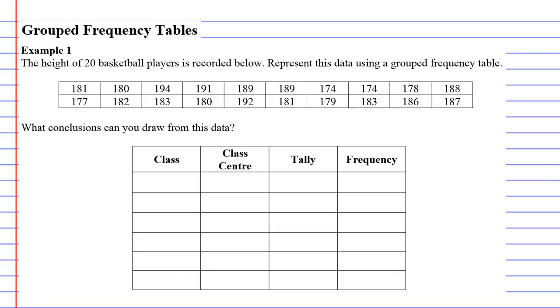Grouped frequency tables, example one. The height of 20 basketball players is recorded below, and they want us to represent this data using a grouped frequency table. This column that says class also means the same as class interval.